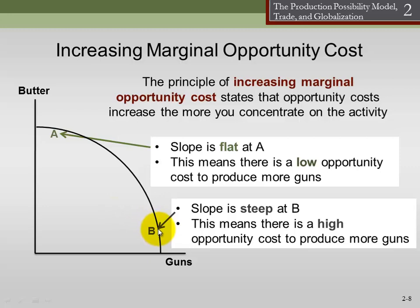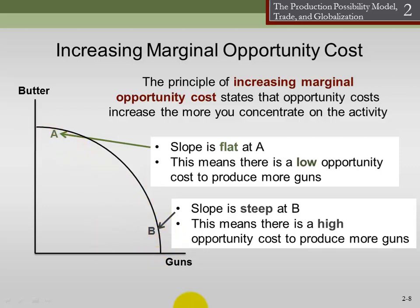But if I'm over here where the slope of this curve is pretty steep, to produce one more gun when I'm already producing a lot of guns, I'm going to have to give up a lot of butter. Why? Because I'm trying to use resources that are really better suited to producing butter to produce guns, and it just doesn't quite work right. So I have to give up an awful lot of butter production to get just one additional gun. This means the opportunity cost of producing a gun starts out pretty low but ends up pretty high — and the same is true for butter. As we produce more and more of a thing, the marginal opportunity cost of producing the next unit of that thing almost always increases.